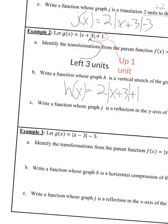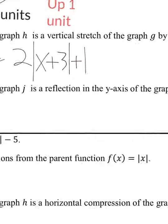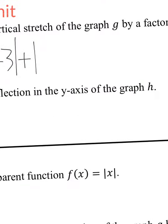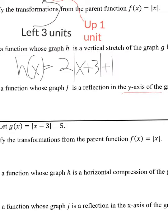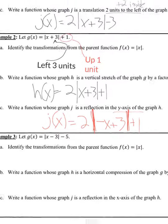Next, write a function whose graph J is a reflection in the Y-axis. A Y-axis reflection means you put a negative on the inside. So J of x equals 2 times the absolute value of negative x plus 3, plus 1. Make sure to bold your absolute value bars so you're not confusing them with ones.